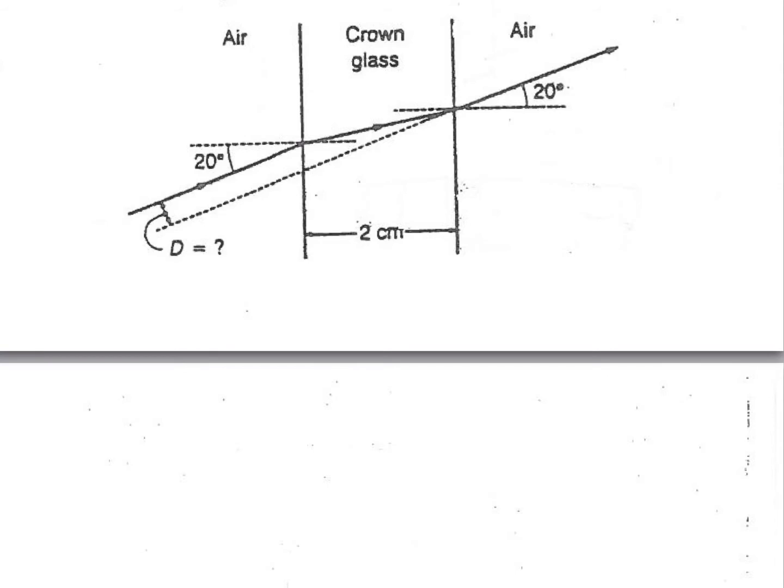We're looking for the distance d, the separation distance of these two parallel lines. In other words, this little segment here, how far apart are those two parallel lines. We have a ray of light that's incident upon the air-crown glass interface. It refracts right there, and if I draw the normal or highlight the normal, the angle of incidence there is 20 degrees.